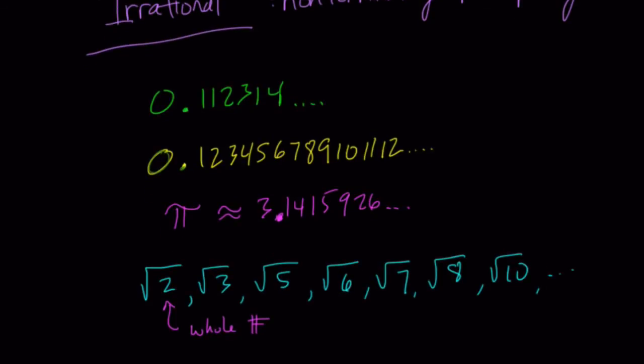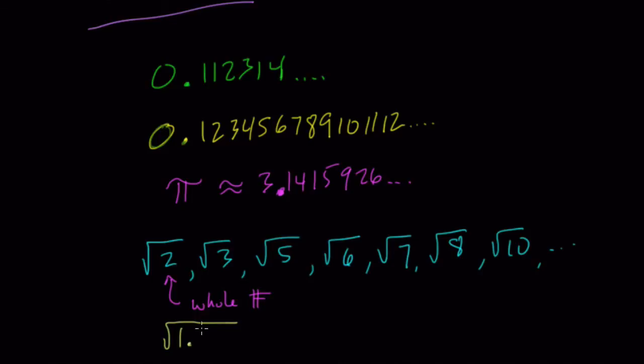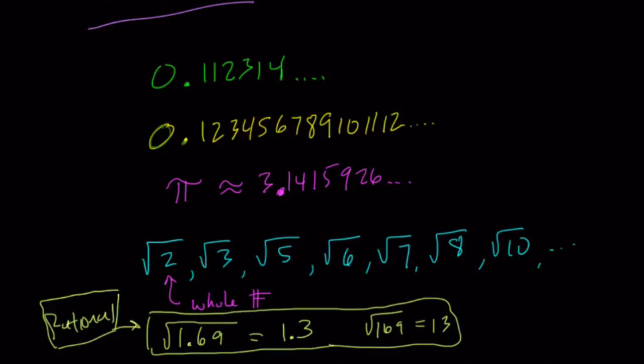One thing you might see in these modules: if you see the square root of a decimal like √1.69, don't assume it's irrational. This is rational. Square root of a decimal is not as easy to identify. Try to find the square root. This is just 1.3, because √169 is 13, and 1.69 is 100 times smaller, so the square root is 10 times smaller.